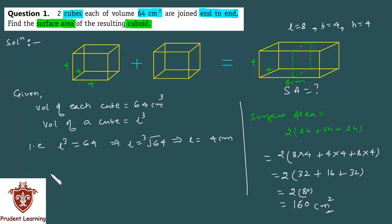Thik, so, finally, aap likhenge, therefore, surface area of the resulting cuboid is 160 centimeter square. So this completes our solution. Let us see the next question.